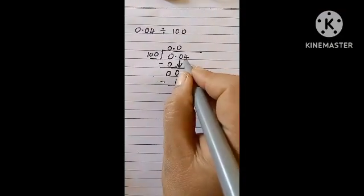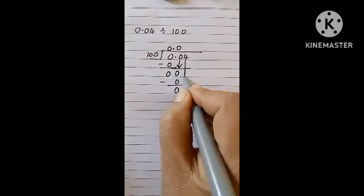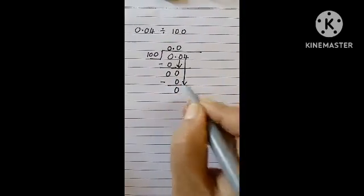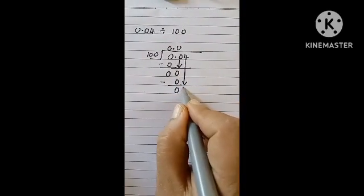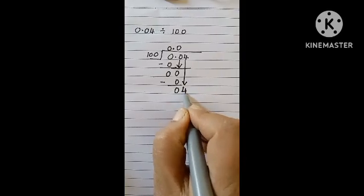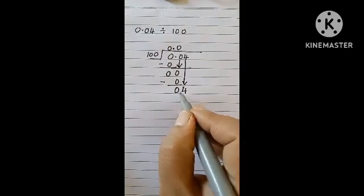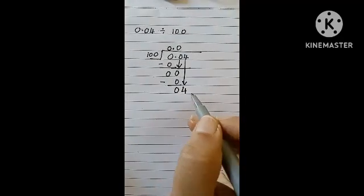Now, you have another number in the dividend, that is 4. I will take this 4 at remainder's place. So, that is 4 here. Now, how many times does this 4 go by 100? 0 times.